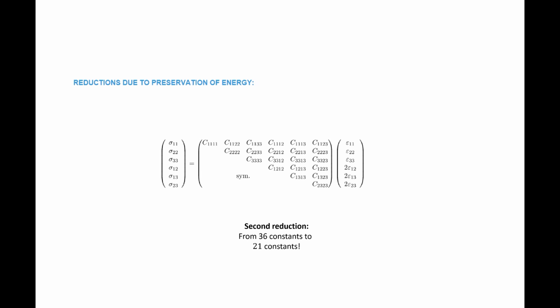So we can reduce the constants from 36 to 21 unknown constants. For a linear elastic material that preserves energy, the relationship between the stress and the strain can be defined using 21 constants. These are the 21 constants needed to define the relationship.